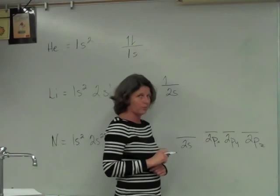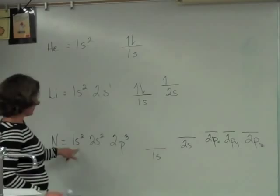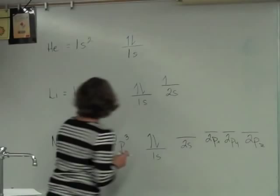My 1s has two electrons, opposite spins. My 2s has got two electrons, opposite spins.